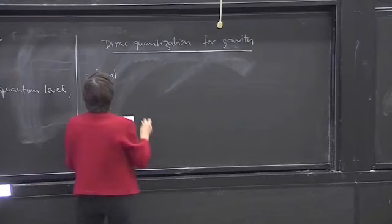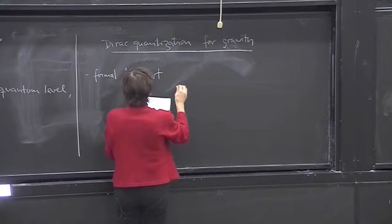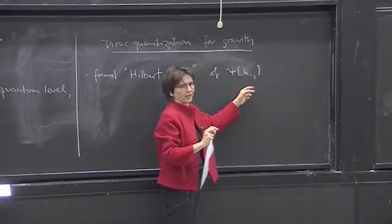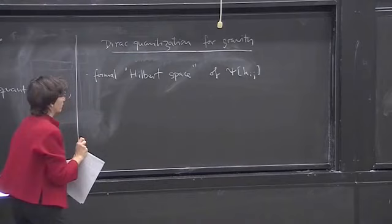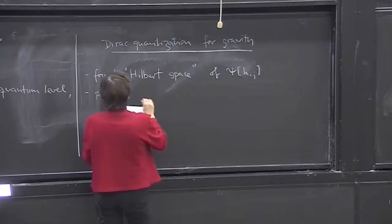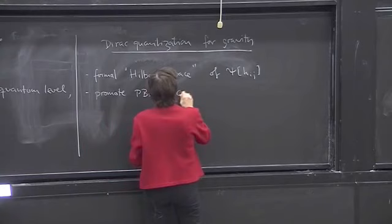So at this formal level, if you are thinking of a Hilbert space of wave functions that depend just on the configuration variables of the classical theory, that is the analog of psi of x in quantum mechanics, that's step number one. And then you just promote Poisson brackets to canonical commutators.